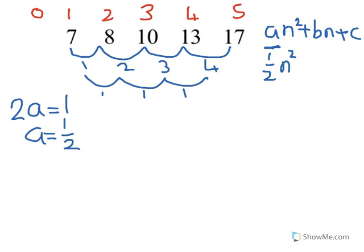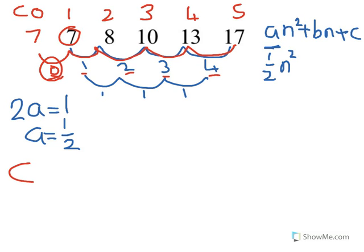If we look at the sequence, it goes 17, take away 4 gets us to 13, take away 3 gets us to 10, take away 2 gets us to 8, take away 1 gets us to 7. So by that pattern, I would take away nothing on my next step. I took away 4, 3, 2, 1, then take away 0. So 7 take away 0 is 7. This zeroth term is C. C equals 7 in this question.